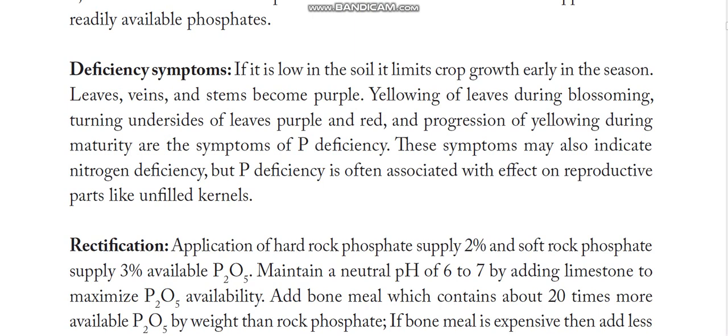Deficiency symptoms of phosphorus: if it is low, it limits crop growth. Leaves, veins, and stems become purple. Under severe deficiency conditions, you can see purple-colored leaves, veins, and stems. Yellowing of leaves during blossoming, turning undersides of leaves purple or red, and yellowing during maturity are symptoms. This yellowing may also be caused by nitrogen deficiency, but phosphorus deficiency is mostly seen during the reproductive phase.